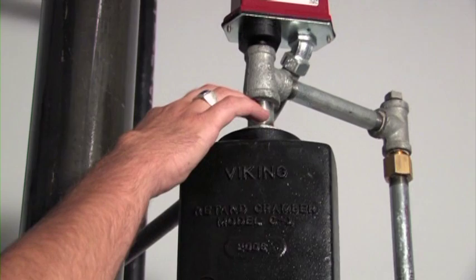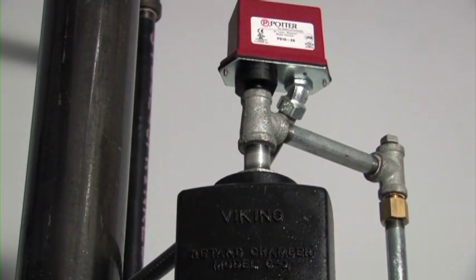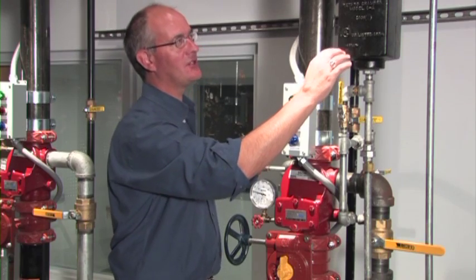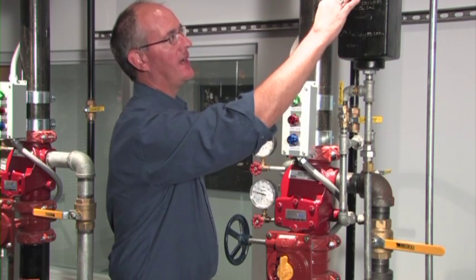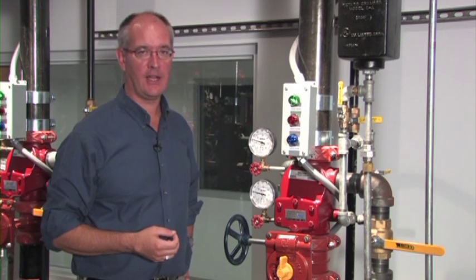Water will fill the retard chamber and activate a water pressure switch or a water motor alarm. Once the retard chamber is filled and pressurized, the switch will be activated and the alarm will either be caused locally or at a central station.